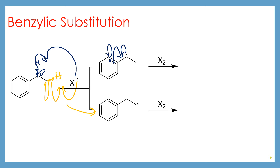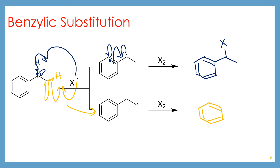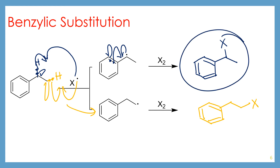So if you add another equivalent of the halogen, you can look at your two possible products. Here you would have the halogen added in the benzylic position, and the bottom one would have the halogen added in that primary position. Looking at the outcome of this reaction, what you would find is that the benzylic product is major and the bottom one probably doesn't form at all.